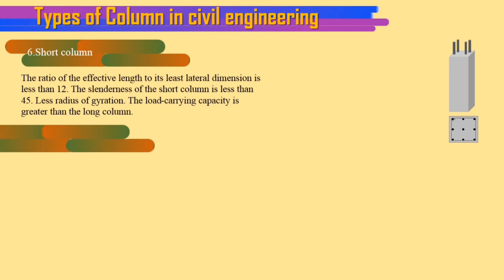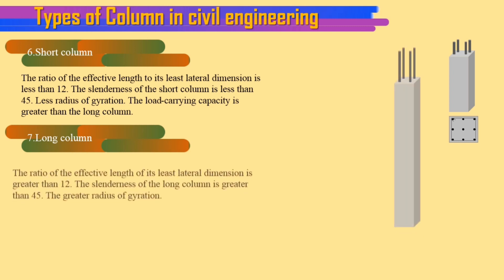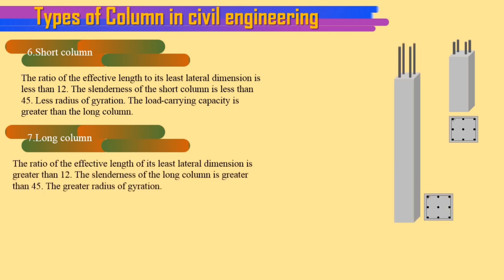7. Long column. The ratio of the effective length to its least lateral dimension is greater than 12. The slenderness of the long column is greater than 45. The greater radius of gyration.